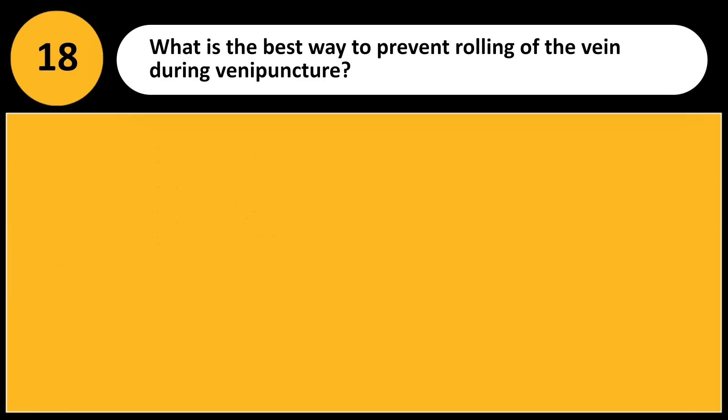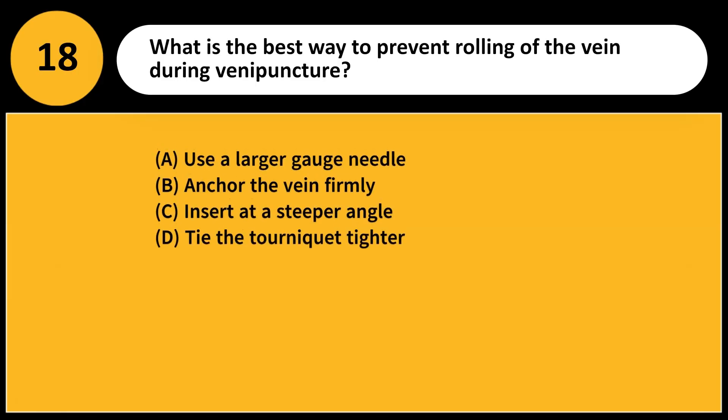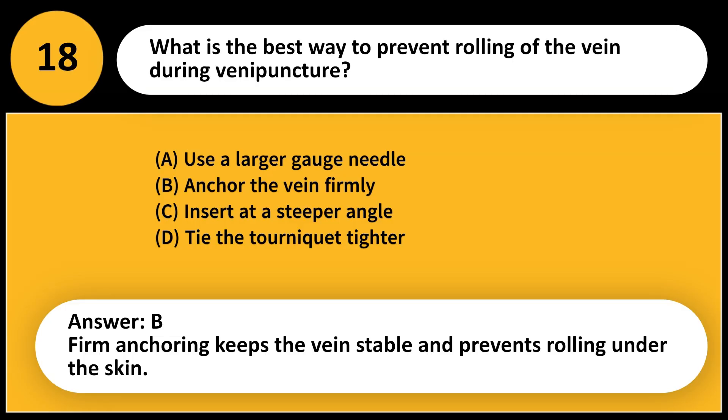What is the best way to prevent rolling of the vein during venipuncture? A. Use a larger gauge needle. B. Anchor the vein firmly. C. Insert at a steeper angle. D. Tie the tourniquet tighter. Answer: B. Firm anchoring keeps the vein stable and prevents rolling under the skin.